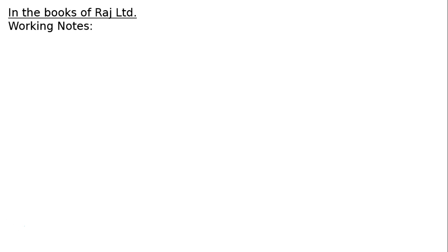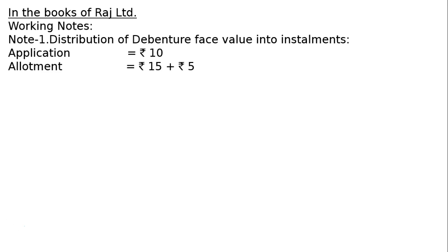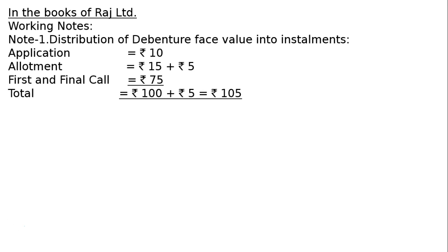In the books of Raj Ltd. Working Note 1 — distribution of debenture face value into installments: Application Rs.10, Allotment Rs.15 plus Rs.5 (premium), First and Final Call Rs.75. Total is Rs.100 plus Rs.5 premium = Rs.105.